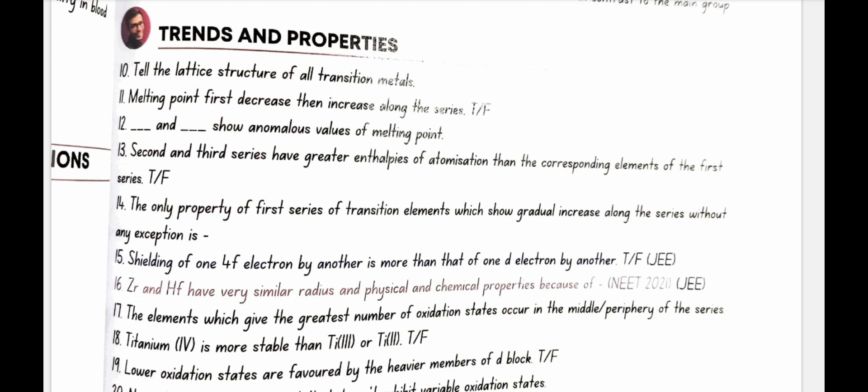ZR and HF have very similar radius and physical and chemical properties because of lanthanoid contraction.